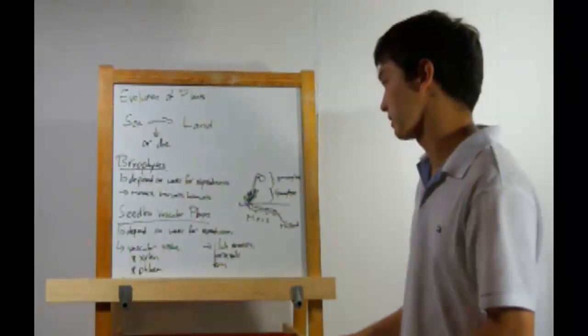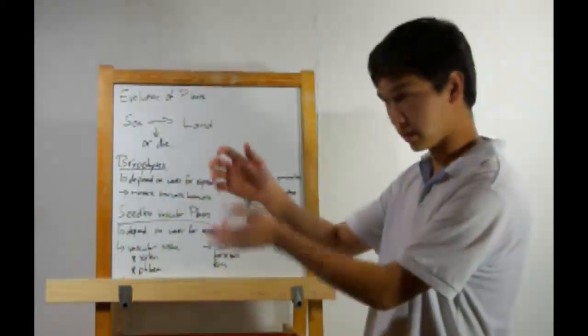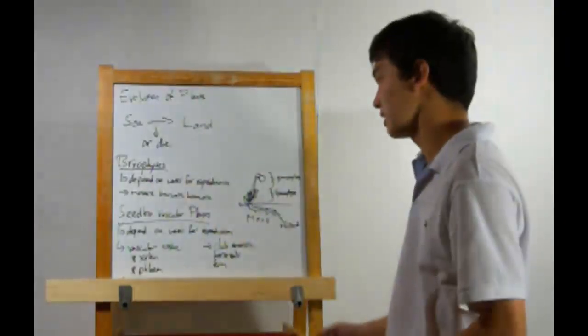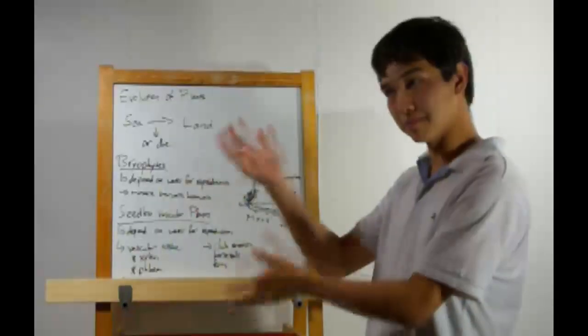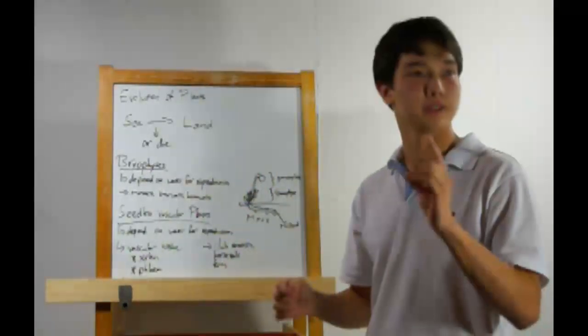Next up, the seedless vascular plants. These also depend on water for reproduction, but they have their reproductive structure located very low on the plant. The rest of the plant can grow extraordinarily high. Some of these created huge prehistoric forests that were simply humongous. But anyways, vascular plants, their big innovation was vascular tissue.